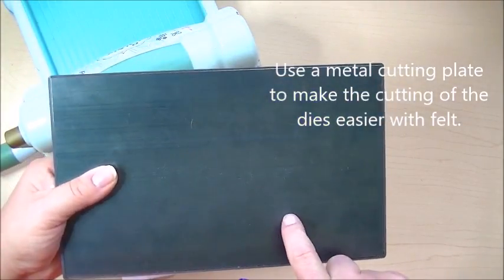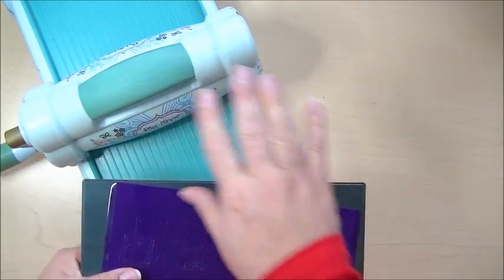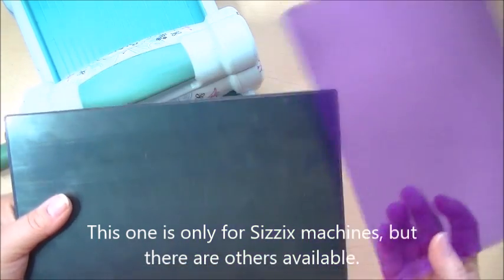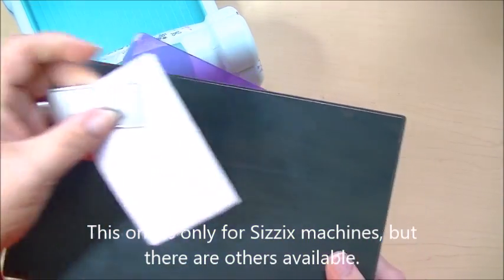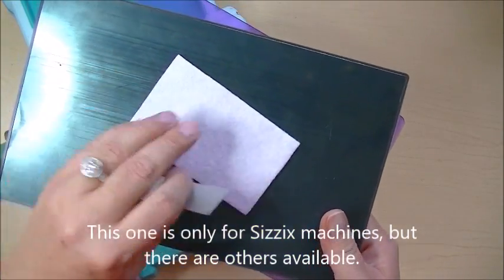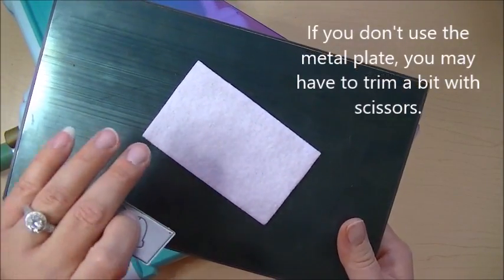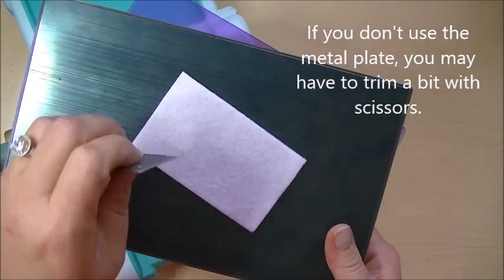And this metal plate is only for the machines made by Sizzix, but you can get other thin metal plates that will help your cutting when you cut out the felt. It just makes it cut a little smoother and easier. If you don't have the metal plate, oftentimes you might have to trim a little bit, and that's okay.